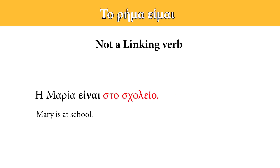The verb είμαι, just like all the other linking verbs, is not always a linking verb. When it does not give an attribute to the subject of the verb, it is not a linking verb. For example, when we say η Μαρία είναι στο σχολείο, it's not a linking verb — it does not give an attribute to Μαρία. The phrase στο σχολείο is a prepositional modifier and, since there is a preposition σε, it is in the accusative case. You don't need to memorize all these rules; you're going to learn much better through practice and examples, and we're going to talk about linking verbs in a separate lesson.